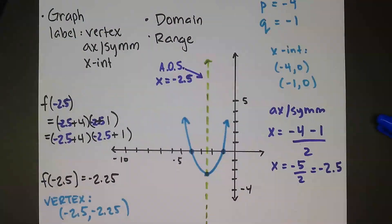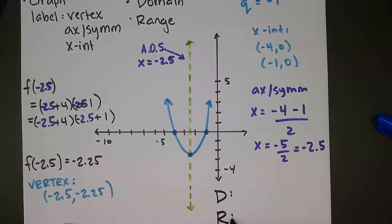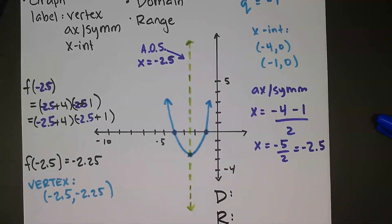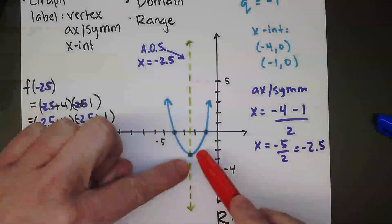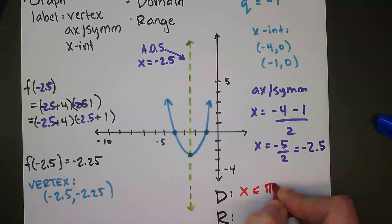Domain and range. Our domain, like for most of these parabolas, because it's going forever left and right, is that x is all real numbers.